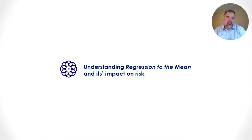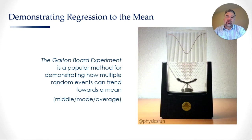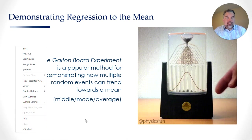Before we can get into regression to the tail, it's probably best we talk about regression to the mean and how it impacts on risk. To demonstrate regression to the mean, a very popular experiment is the Galton Board experiment, which shows how multiple random events trend towards a mean. The way this experiment works is fairly simple: at the top is a reservoir filled with an unlimited number of little metal pellets. These pellets are then released into a filtering section where they bounce around randomly, possibly even chaotically, until they gravitate towards the bottom, settle in a particular tube or lane, and find their home.